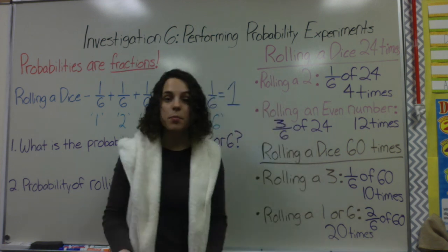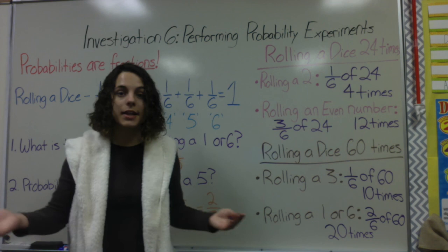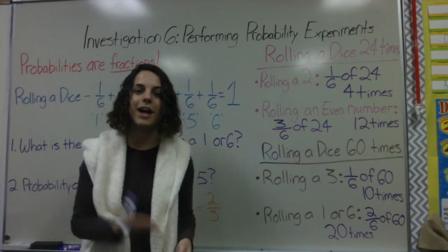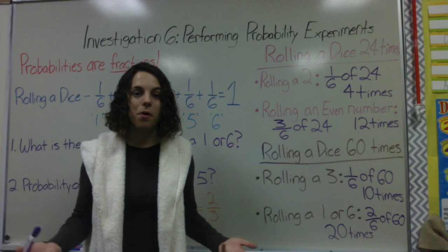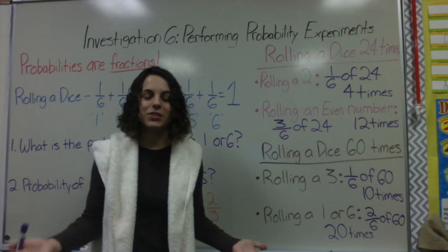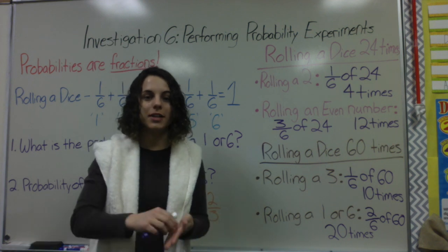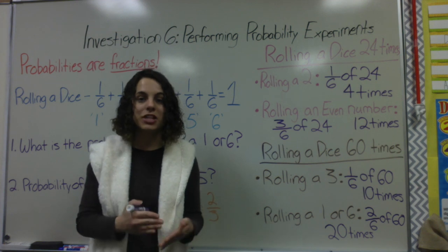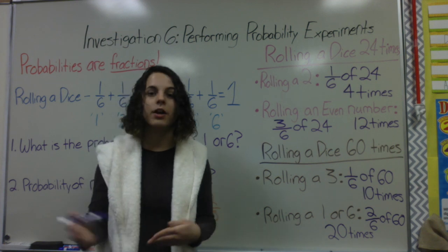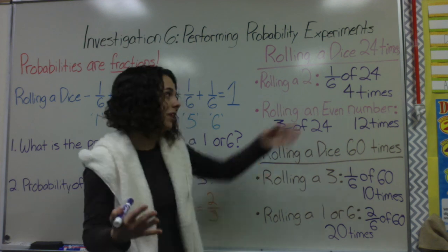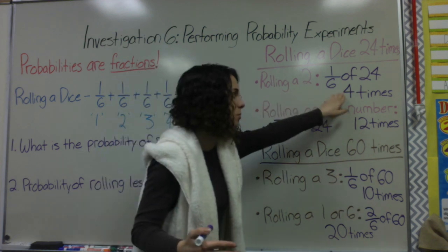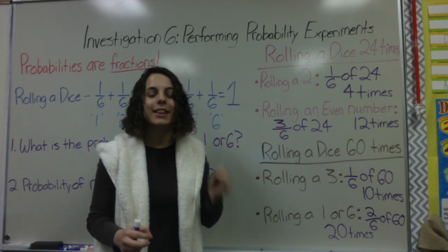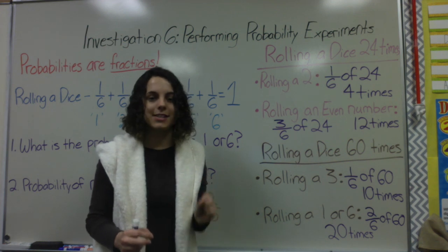That's how I approach problems about probability and performing different experiments. When I roll the dice multiple times, how many times could I possibly roll different types of numbers? Use your fraction, because probability is always written as a fraction. And if you're rolling the dice multiple times, then you need to do a little bit of extra work of division to figure out how many times you would possibly roll. But if you're just looking for the probability, that's always going to be written as a fraction.